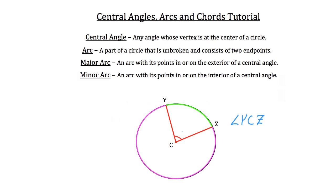For example, if I were to tell you that this central angle right now was 100 degrees, you obviously know that the minor arc here is also 100 degrees. Now, to solve for the major arc, you can take the total degree measure of the circle — which is 360 degrees — and subtract the minor arc. So in our case, 100 degrees, and what you'd get is that your major arc has a total degree measure of 260 degrees.